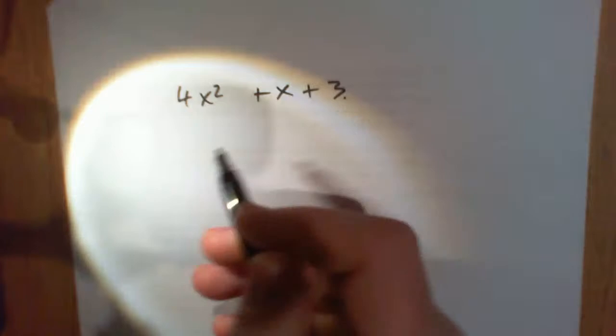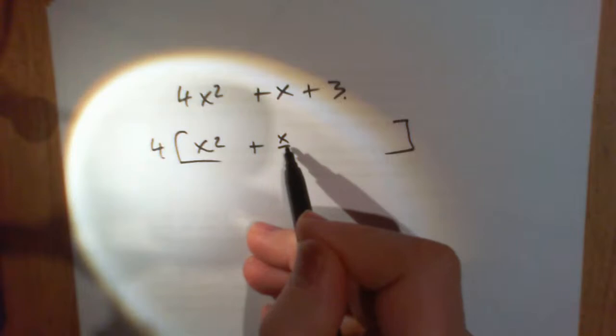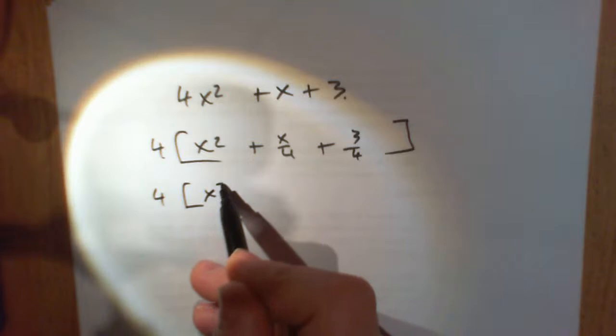Now we'll try another one. We'll get a bit tougher on this one. We'll go 4x² plus x plus 3. First things first, get the 4 out: x² plus x over 4 plus 3 over 4. Next thing we do.